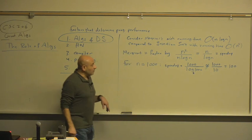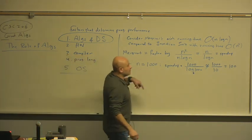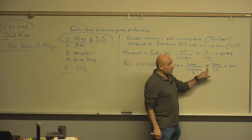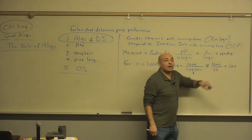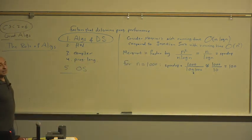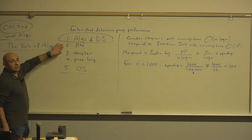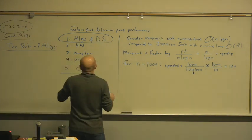So for n equals 1,000, merge sort is faster than insertion sort by 100 times. When you look at all of these factors, none of these factors is going to give you a speedup by 100.